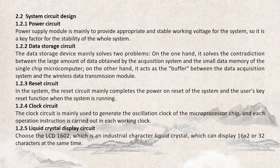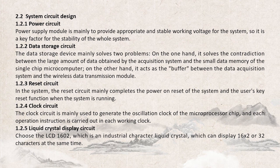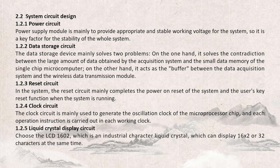System circuit design. Power circuit: the power supply module is meant to provide appropriate and stable working voltage for the system, so it is a key factor for the stability of the whole system. Data storage circuit: the data storage device mainly solves two problems. On one hand, it solves the contradiction between the large amount of data obtained by the acquisition system and the small data memory of the single-chip microcomputer. On the other hand, it acts as the buffer between the data acquisition system and the wireless data transmission module. Reset circuit: in a system, the reset circuit mainly completes the power-on reset of the system and the user's key reset function when the system is running.